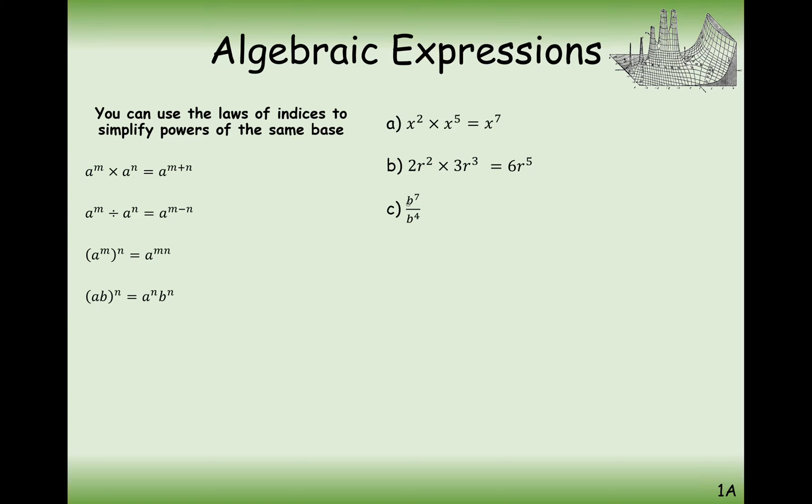On to division now. So b to the power of 7 divided by b to the power of 4. In this case here, you subtract the powers from each other. In question D here, we're doing 6 divided by 3 first. So when I suggest you do these questions, have a go at the numbers first and then have a go at the powers afterwards. So in this case, we're dividing our numbers, but we are subtracting our indices. So in this case here, we're going to get 2 from 6 divided by 3 and 5 minus 3 is 2 as well.